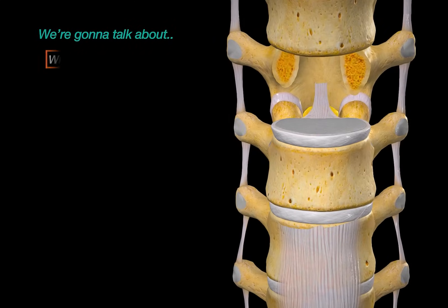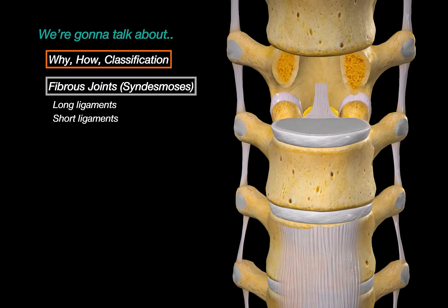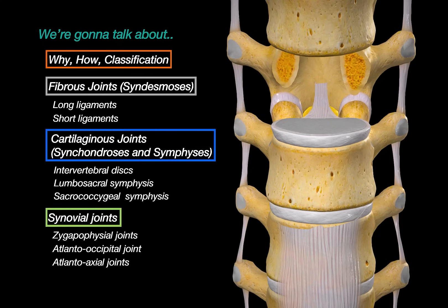In this video we will start with why we have vertebral joints, how they are structured and how we classify them. We will look at fibrous joints, cartilage joints, synovial joints and bony joints, and also look specifically at common injuries like disc herniations.